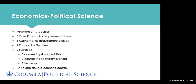We also have a Political Science and Economics joint major. For this one, you need a minimum of 17 courses — five core economics, three mathematics, two economics electives, two subfield sequences (three courses in your primary subfield and two in your secondary), and two political science seminars. Unlike the statistics joint major, you can double count one course in this track.